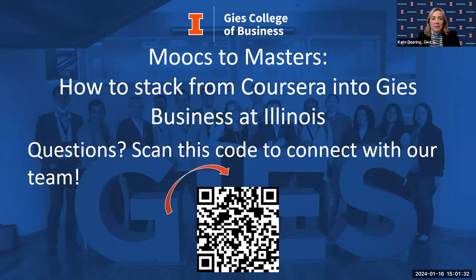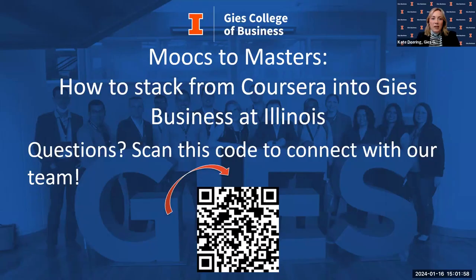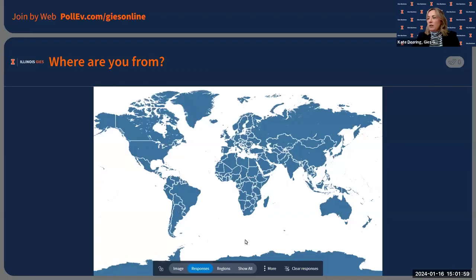Before we jump to the next screen, I want to find out where everyone is from. This QR code on your first slide is a great resource — go ahead and scan it to connect with one of our admission counselors here at GEESE. There's a short form you can fill out and we'll reach out to you. You should see a big map on your screen — tap on it to drop your pin.